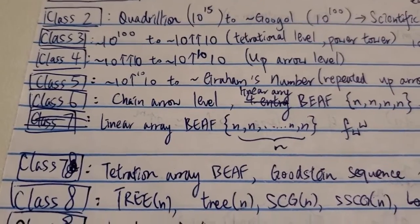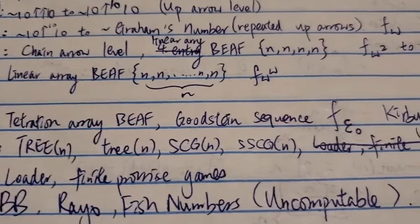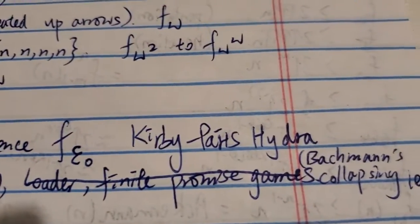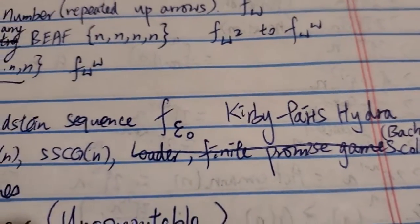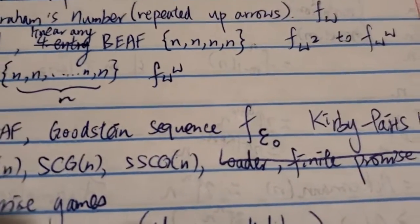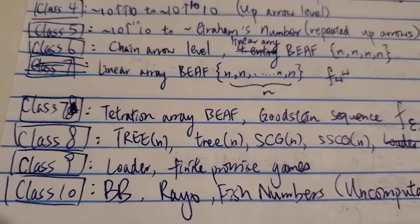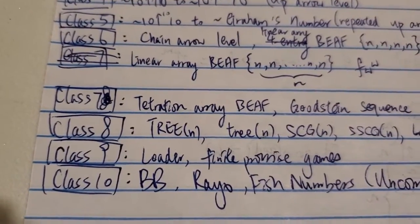Class 7 is the tetrational array BEAF, the Goodstein sequence, or the Kirby-Paris Hydra. Those are the more well-known functions. They have a growth rate of around f of epsilon naught. That's how I decide this for class 7.